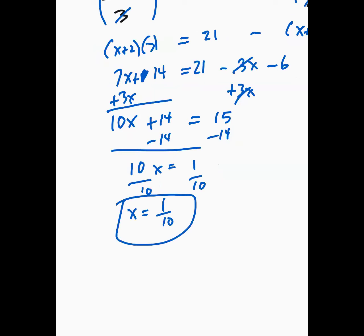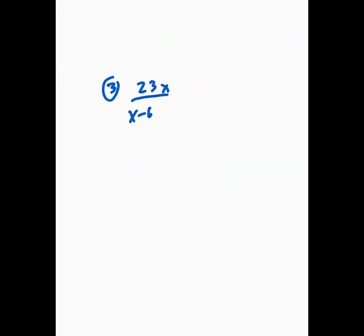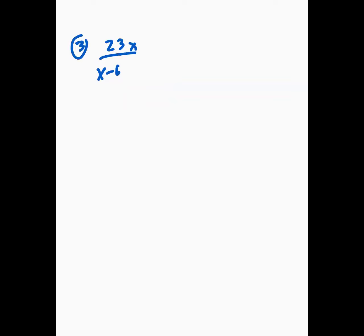Let's go to problem number 3. It says 23x over x take away 6, and it wants us to find the domain of this. To find the domain, remember that there are three kinds of numbers — negative numbers, zero, and positive numbers. The denominator of a function is not allowed to have zero. So the bottom of this fraction cannot equal zero, which means x cannot equal 6. So the domain is x cannot equal 6.